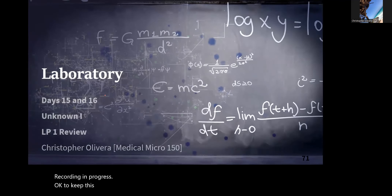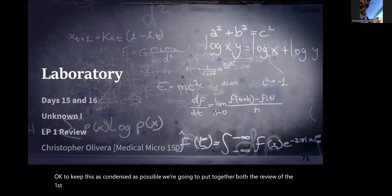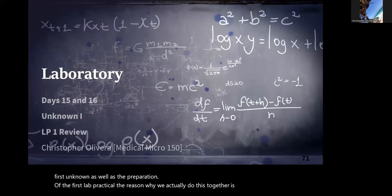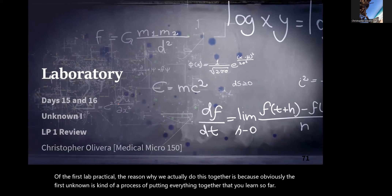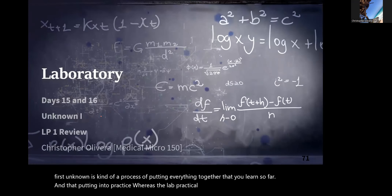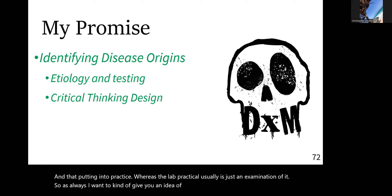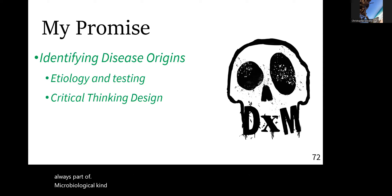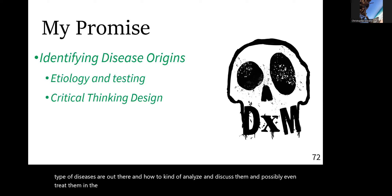To keep this as condensed as possible, we're going to put together both the review of the first unknown as well as the preparation of the first lab practical. The reason we do this together is because the first unknown is a process of putting everything you've learned so far into practice, whereas the lab practical is usually just an examination of it. This subject is called etiology.